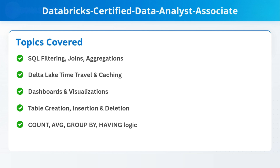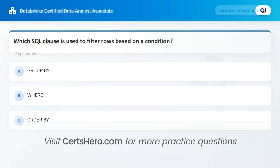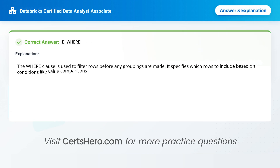Which SQL clause is used to filter rows based on a condition? A. Group by. B. Where. C. Order by. Correct answer is B. Where. The WHERE clause is used to filter rows before any groupings are made. It specifies which rows to include based on conditions like value comparisons or logical expressions.